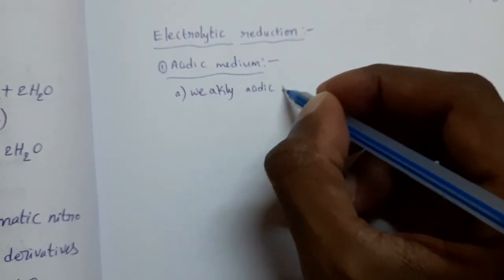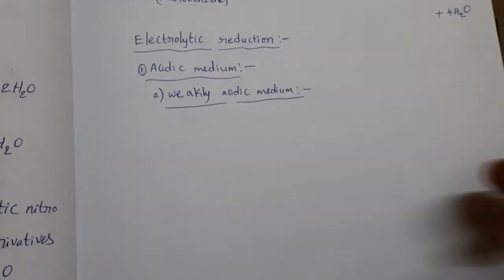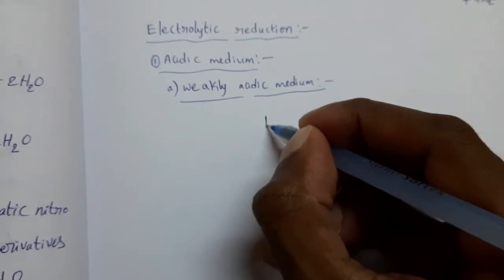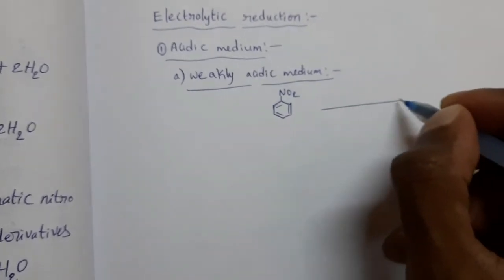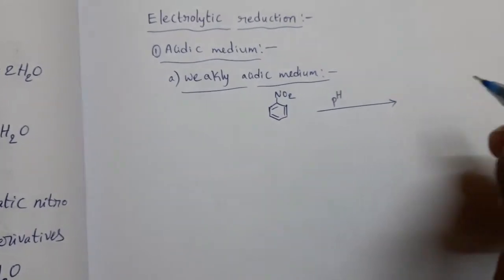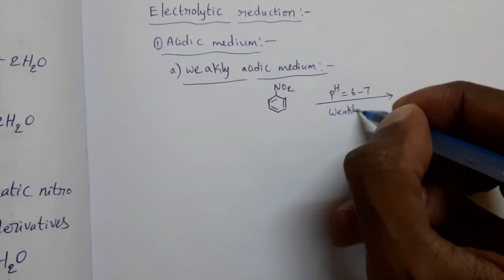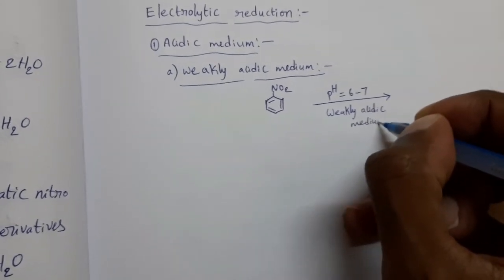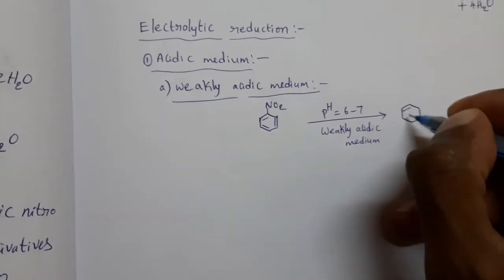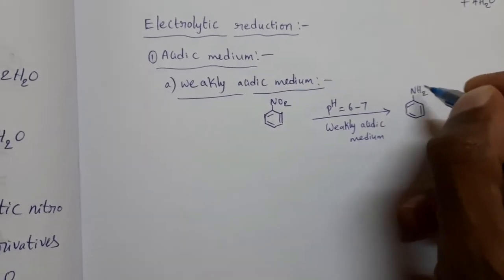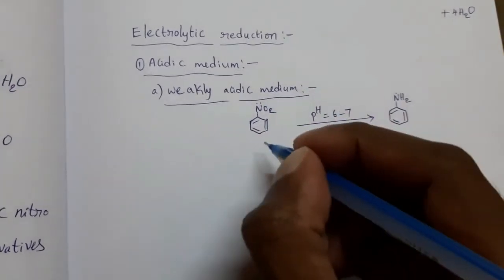In weakly acidic medium conditions — that means pH value 6 to 7 — nitrobenzene undergoes electrolytic reduction and the product we can get is aniline. So this is the electrolytic reduction of nitrobenzene in weak acidic medium: nitrobenzene gives aniline.